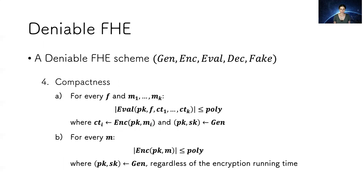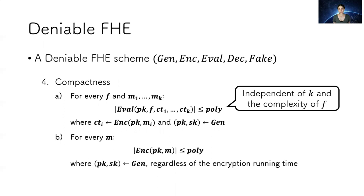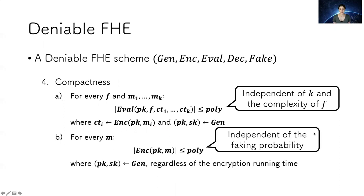Compactness is the last property. We want the compactness of an FHE scheme — that the evaluated ciphertexts do not grow; they are independent of the complexity of the function f or the number of ciphertexts involved in the computation. Also, we want the ciphertexts to be independent of the faking probability, regardless of the encryption running time.